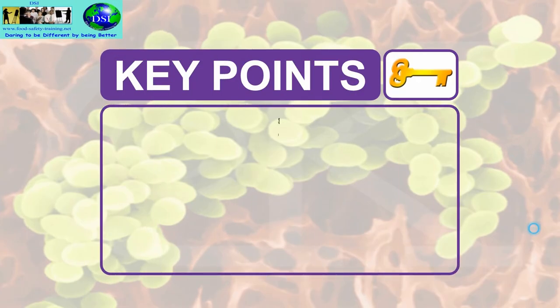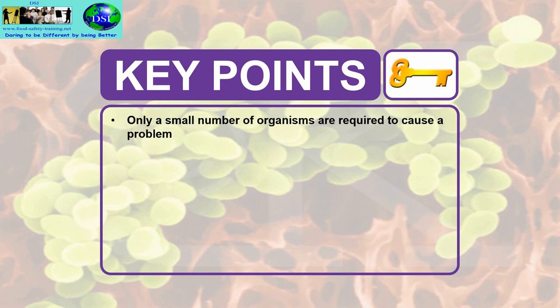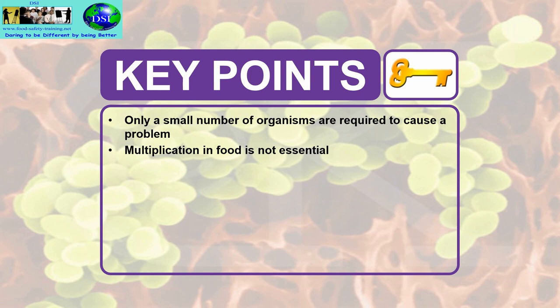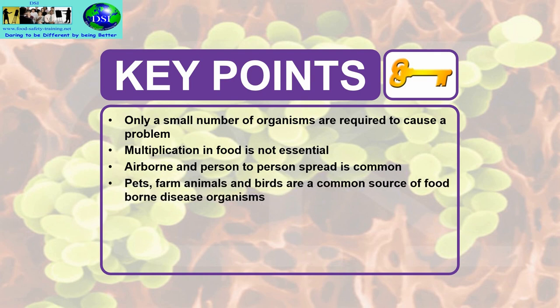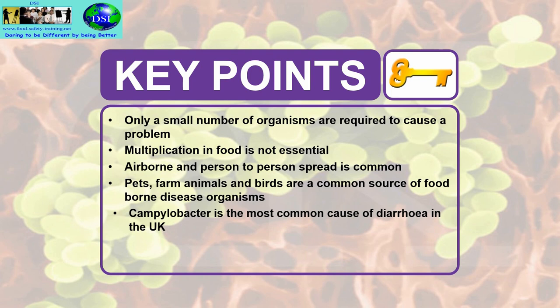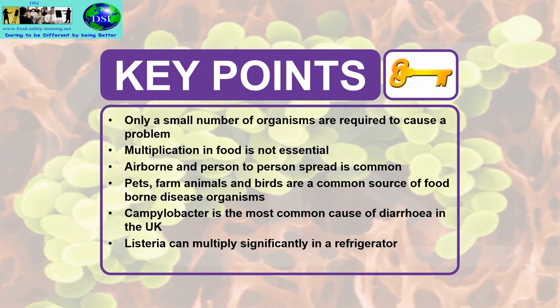Key points: only a small number of organisms are required to cause foodborne disease — from one particle upwards. Multiplication in food is not essential; foodborne diseases do not multiply in food. Airborne and person-to-person spread is common — a cough or sneeze from someone with norovirus can spread up to 50 metres. Pets, farm animals and birds are a common source of foodborne disease organisms. Campylobacter is the most common cause of diarrhoea in the UK — be especially careful with packaged poultry as the bacteria is present not just on the chicken skin and in the cavity but also on the outside of the packaging. Listeria can multiply significantly in a refrigerator because it grows from −1.5°C.